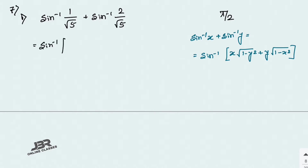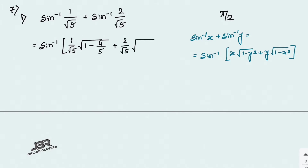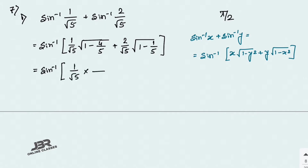We get sin⁻¹ of (1/√5)·√(1 − 4/5) + (2/√5)·√(1 − 1/5). That gives 1/√5 · √(1/5) = 1/√5 · 1/√5 = 1/5. Taking the square root of 1/5 gives 1/√5, and 1/√5 · 1/√5 equals 1/5.